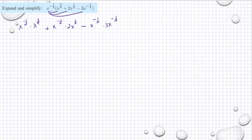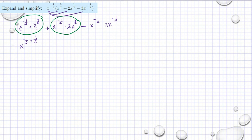Okay, let's start with the first product. We have x^(-1/2) times x^(3/2), because it is a multiplication and they have the same base, so we add the exponents. The second product gives us 2x^(-1/2 + 1/2), and the third term gives us minus 3x^(-1/2 + (-1/2)). Simplifying: 3/2 minus 1/2 gives us x raised to 1.